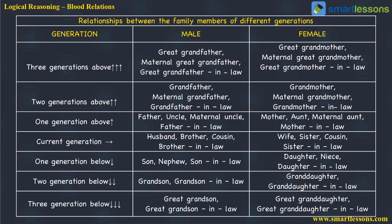It could even be your father-in-law's cousin or your mother-in-law's cousin — they come one generation above. If you are talking one generation above as a female relationship, it could be your mother, your aunt (your mother's sister, elder or younger, or your father's sister), or maternal aunt (your mother's sister), and mother-in-law (your wife's mother) or your mother-in-law's sister.